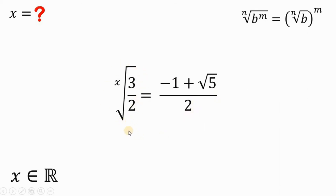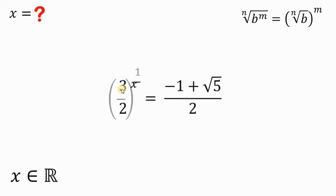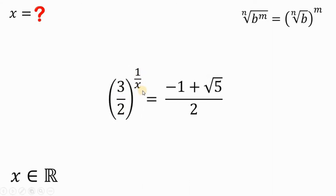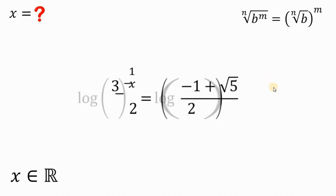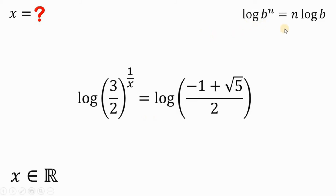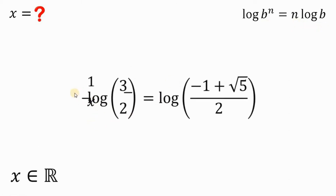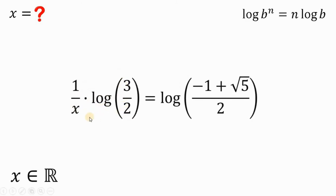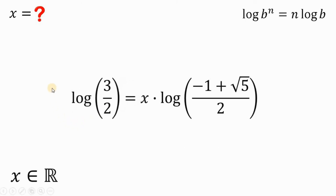Let's simplify the left-hand side: x root of 3 over 2 can be written as 3 over 2 raised to 1 over x. To solve for x, we will use logarithm because x is in the exponent. Let's take the logarithm on both sides — note we are using logarithm in base 10. Using the property of logarithm: logarithm of b raised to n equals n times logarithm of b. Therefore, the left-hand side becomes 1 over x times logarithm of 3 over 2. To solve for x, first multiply both sides by x, then divide both sides by logarithm of negative 1 plus square root of 5 over 2.